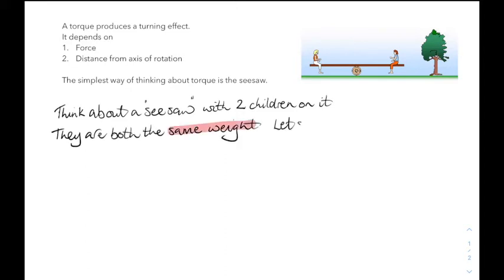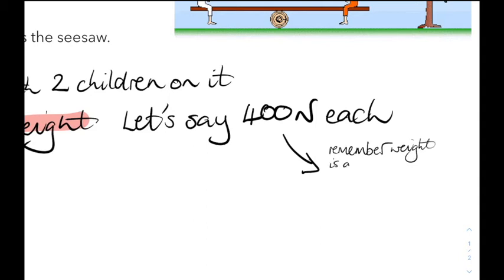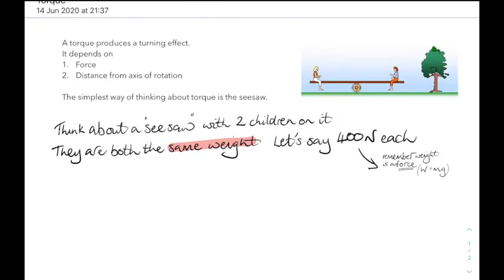Let's think about a seesaw. There's two kids sitting on it. They both have the same weight. Let's say that they're 400 newtons each. You could work out what mass they are if you like. 42 kilograms I think it is.